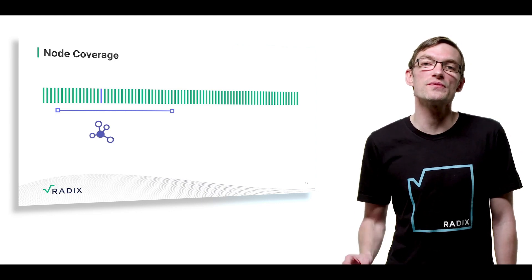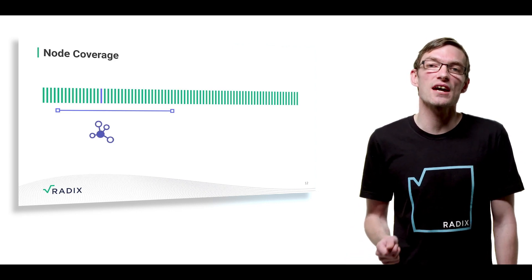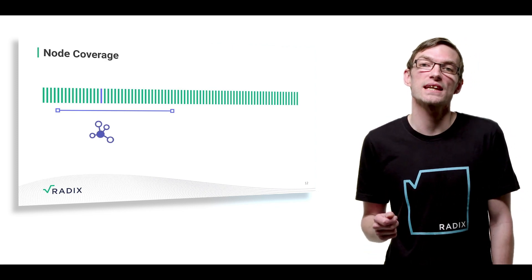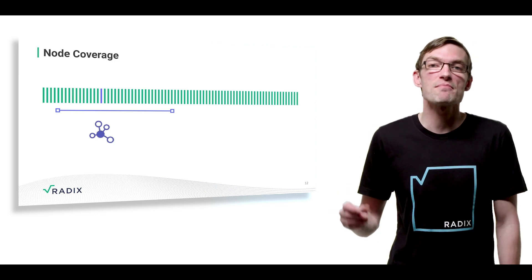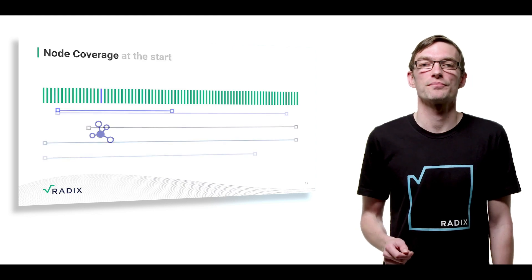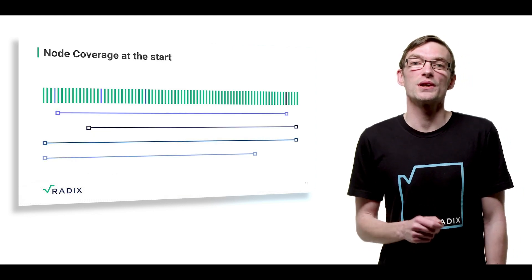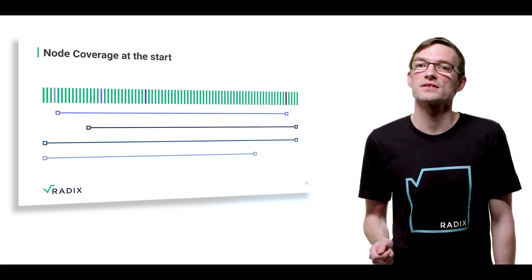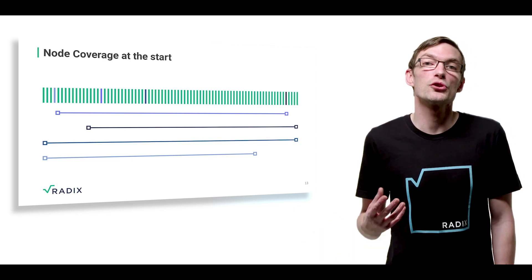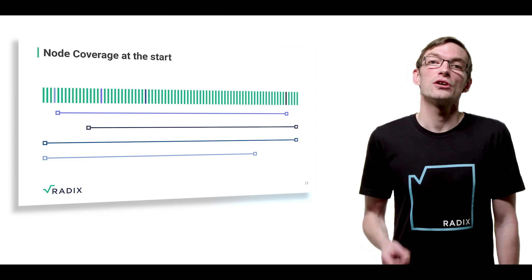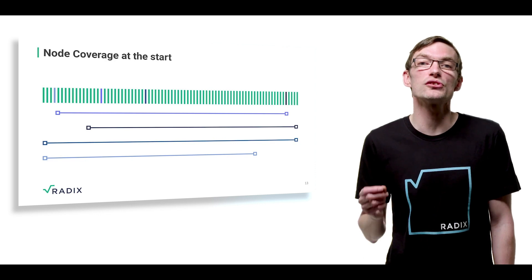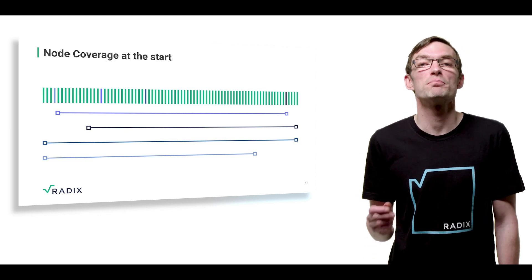The more shards a node services, the more likely it is to get fees and rewards. Every node attempts to maintain as many shards as it can, scaling down and maintaining fewer shards if it is unable to keep up and stay synchronized. At the start, when there are fewer accounts and transactions, it is likely that all nodes will maintain all shards. The more nodes that are maintaining a shard, the more secure a shard and its history is, due to the number of redundant copies of the shard information being maintained.